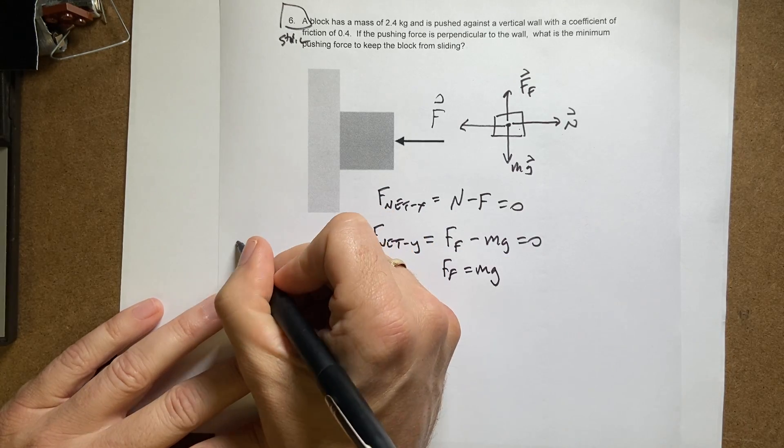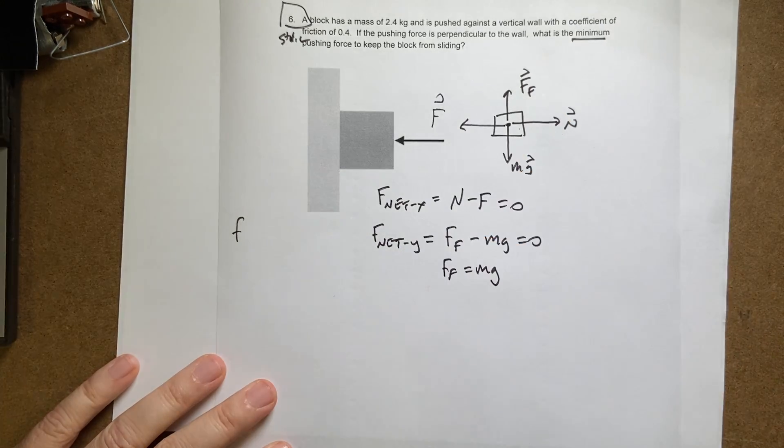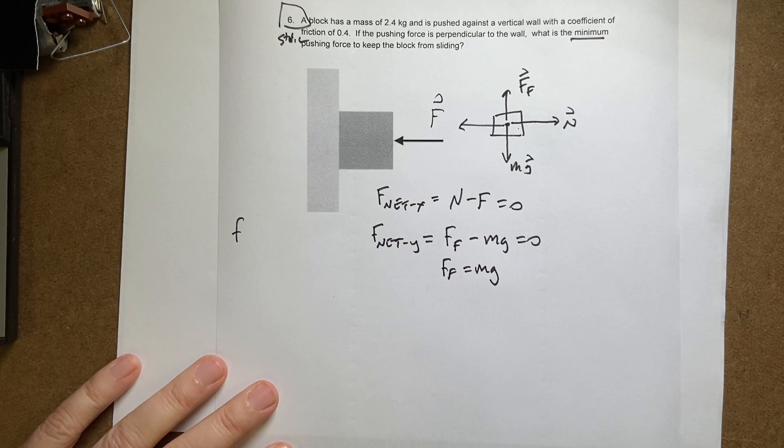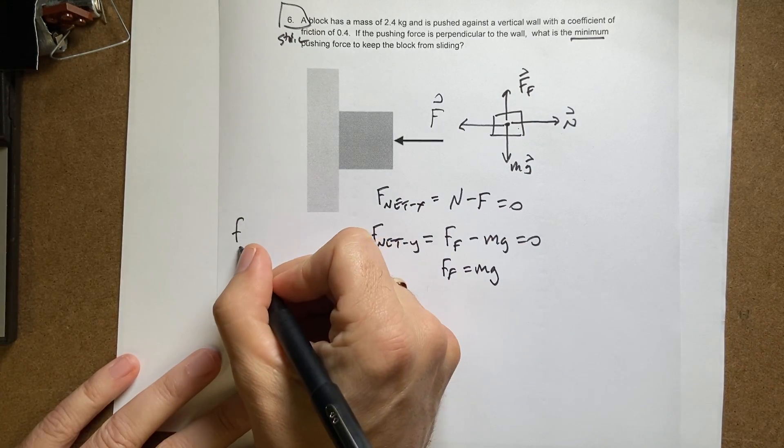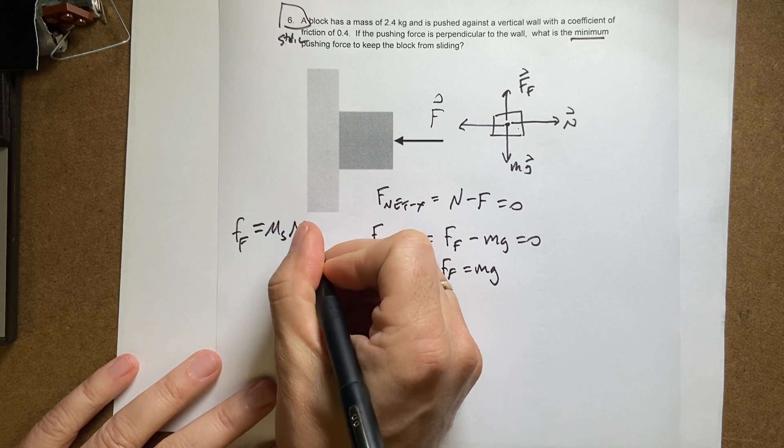And then I can use my model. If it's at the right minimum force, I'm going to have the maximum frictional force possible. So it's going to be F friction is going to be equal to mu S times the normal force.